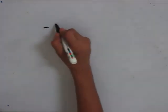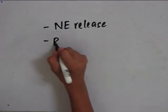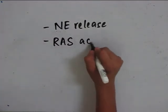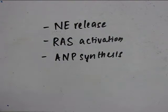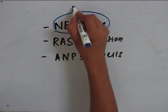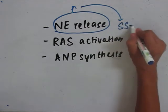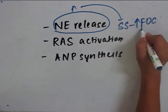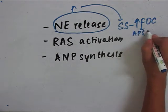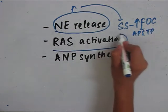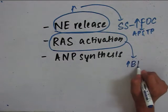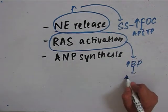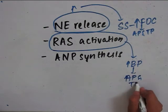The third point is noradrenaline release, renin-angiotensin system activation, and atrial natriuretic peptide synthesis. Due to noradrenaline release, there is increased sympathetic stimulation, which will increase the force of contraction, and hence it will maintain the arterial pressure and tissue perfusion. Due to RAS activation, that is renin-angiotensin system activation, there is increase in blood pressure, which will also maintain the arterial pressure and tissue perfusion.